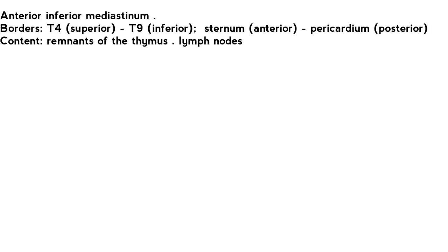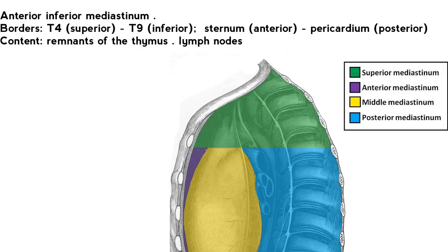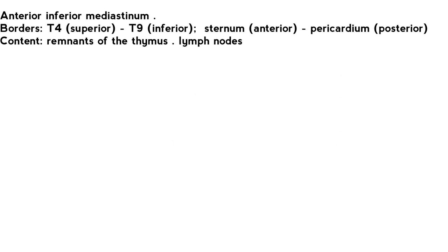Anterior inferior mediastinum. Borders: T4 superior, T9 inferior, sternum anteriorly, pericardium posteriorly. Contents: remnants of the thymus and lymph nodes.